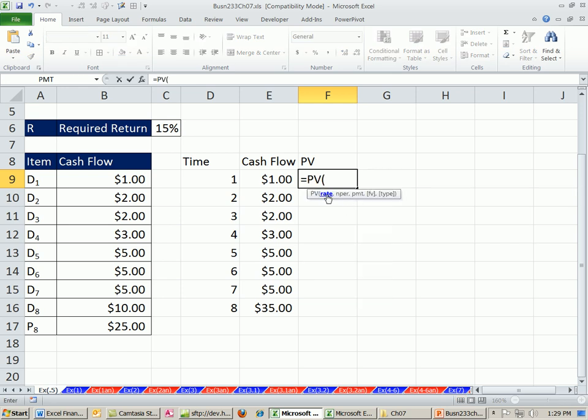Equals PV. And the rate, our required return is 15%. That's our discounting rate. That can be tricky to calculate sometimes for stocks. We'll see later in this class some methods of trying to figure out what the required return is.